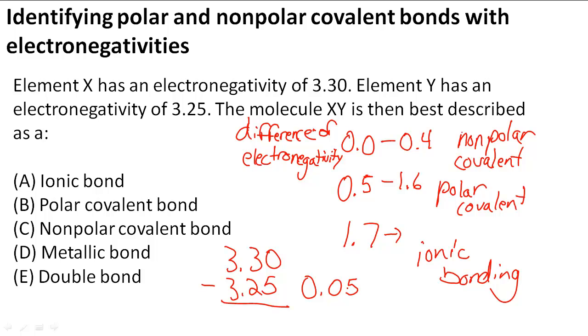And usually the differences are not that small, they're bigger. But here, this is showing us that there's a pretty small difference, which indicates that it is between 0.0 and 0.4, which means it's a nonpolar covalent bond. And C would be the answer to our question.